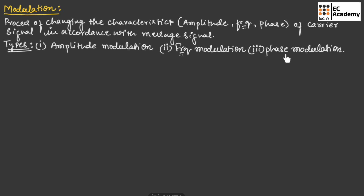If the amplitude of the carrier signal is varied in accordance with the message signal, the modulation is known as amplitude modulation. If the frequency of the carrier signal is varied in accordance with the message signal, the modulation is known as frequency modulation.